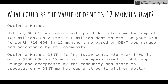What could the value of Dent be in 12 months? This is pure speculation — do your own due diligence before investing. Assuming Dent hits one cent, that puts it at a market cap of 100 million dollars. If you invest two Ethereum at around 350 dollars each — that's 700 dollars — buying one million Dent tokens, you'd get back ten thousand dollars in 12 months. If it hits 10 cents, that same 700 dollars would be worth 100,000 dollars, putting the market cap at one billion dollars.